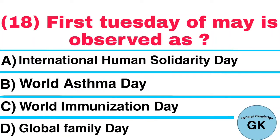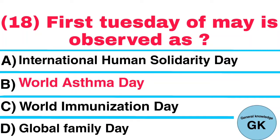Question number 18. First Tuesday of May is observed as: A. International Human Solidarity Day, B. World Asthma Day, C. World Immunization Day, D. Global Family Day. Answer: World Asthma Day.